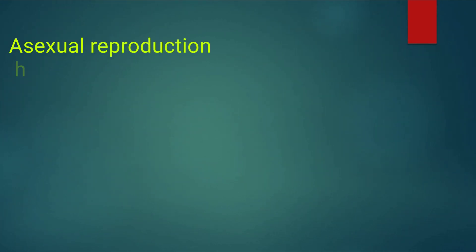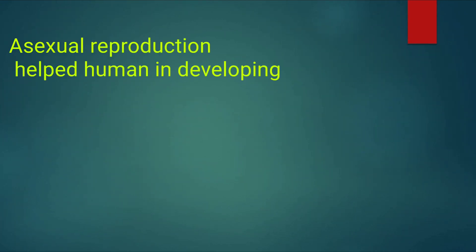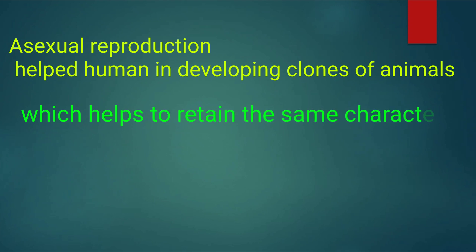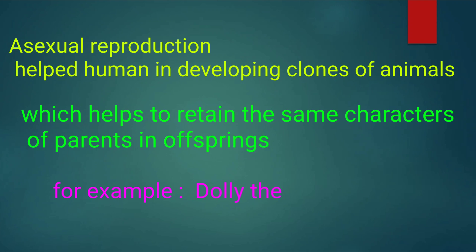Asexual reproduction helps humans in developing clones of animals, which helps to retain the same characters of parents in offspring. For example, Dolly the sheep was the first cloned animal.